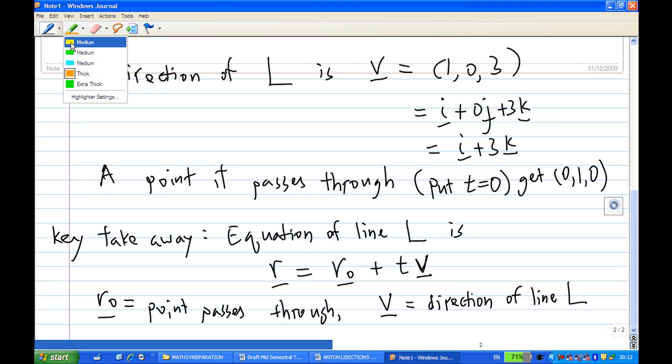So next time when people ask you to write down the vector equation of the line, it will look like this way: r = r0 + tV. All I need is to find out what is r0 and V.